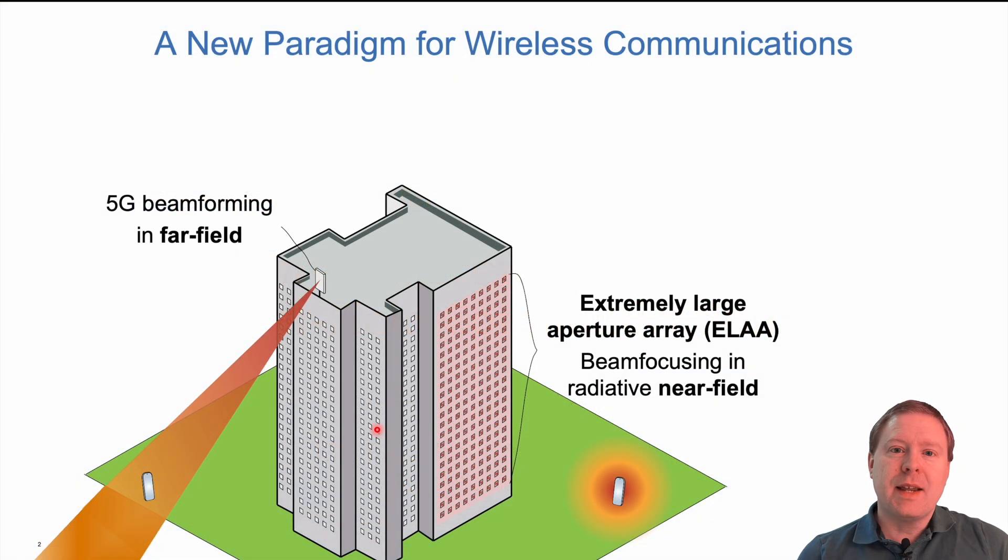One can say that near-field communication is a paradigm shift for wireless communications because it changes how we are transmitting. Traditionally, up until 5G, we are typically using base stations with antenna arrays that can send signals towards users that are in the so-called far field, and the beam then looks like a ray of light.